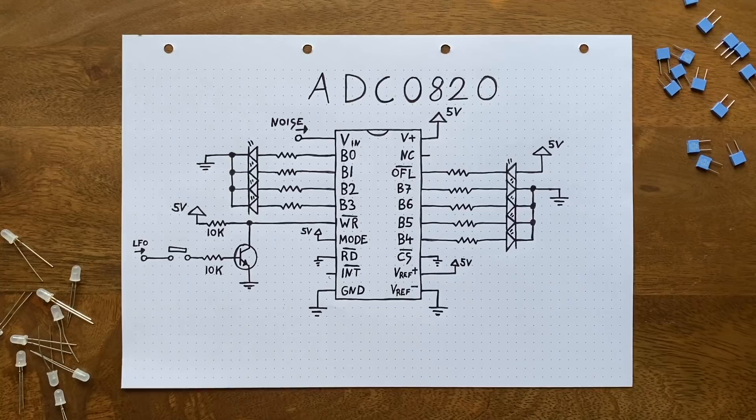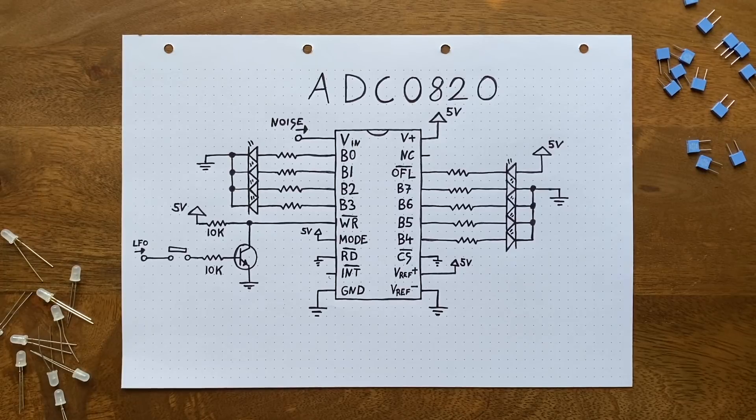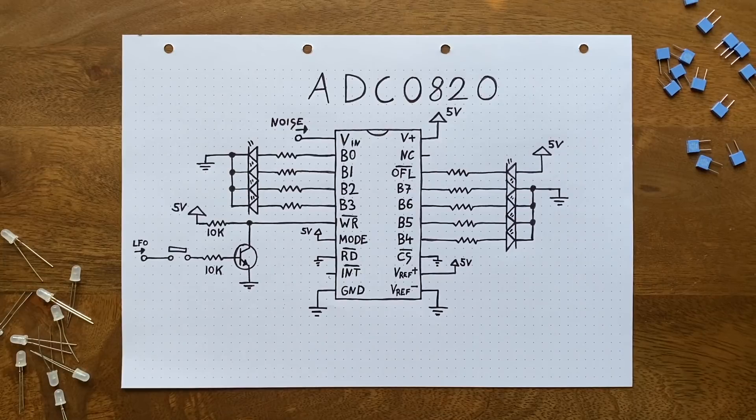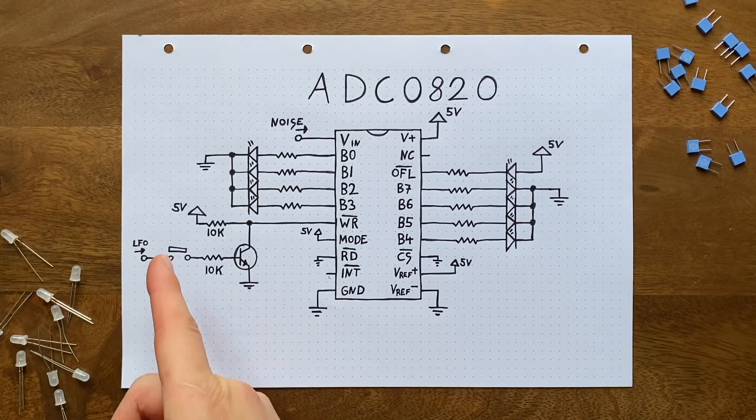Thankfully, this chip is able to do both at the same time: sample the incoming voltage and then convert it to a binary value. The way this works is simple. We feed our noise into this input while sending a trigger signal into this pin.